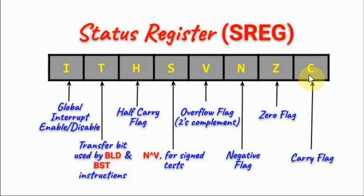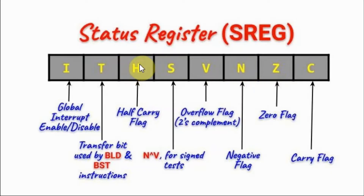The carry flag is set whenever there is a carry out from a byte operation. The zero flag is set when the resultant arithmetic operation gives us a zero. The N flag is set whenever the resultant is a negative number. And the H flag is set whenever there is a carry out from a binary coded decimal operation.